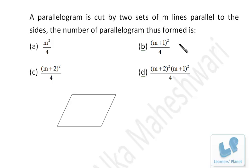So let's take the value of m as 3. You can take any value, but I'm just taking 3. That means I have drawn three lines parallel to the sides, that is parallel to both the sides.